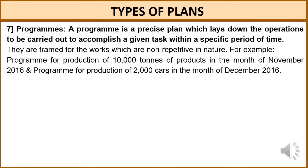The next type is programs. A program is a single-use plan covering a relatively large set of activities. It outlines the major steps required to reach an objective, the organization or member responsible at each step, and the order and timing of each step. A program is a precise plan which lays down the operations to be carried out to accomplish a given task within a specific period of time. For example, a program for production of 10,000 tons of products in November 2016, or a program for production of 2,000 cars in December 2016.